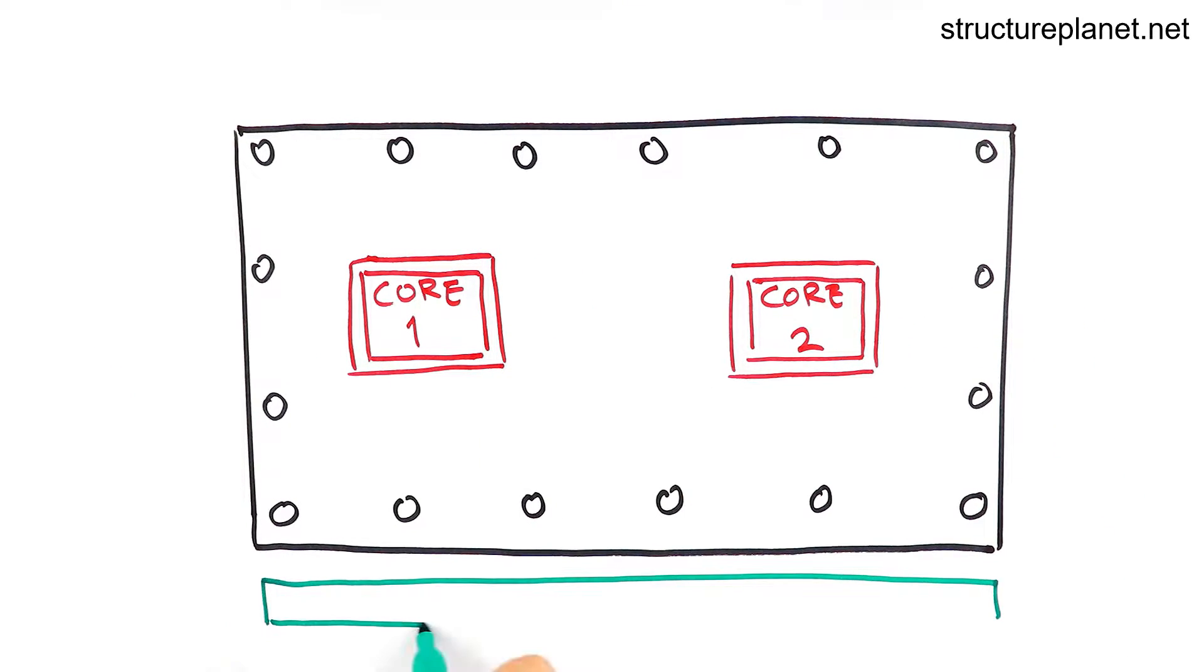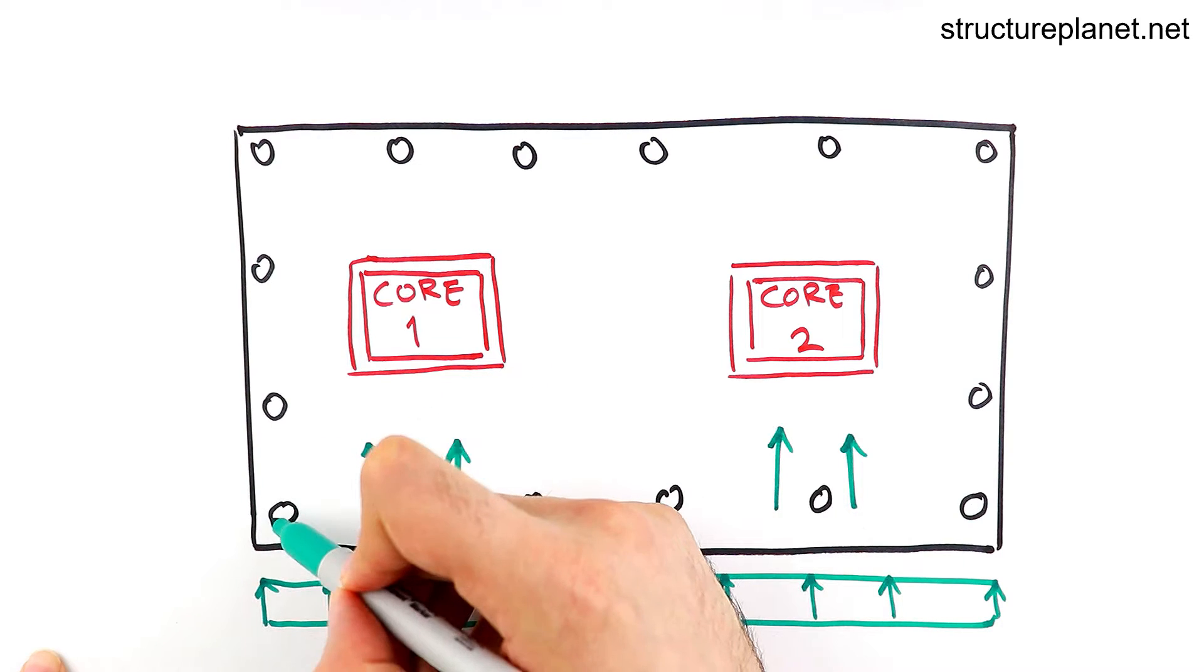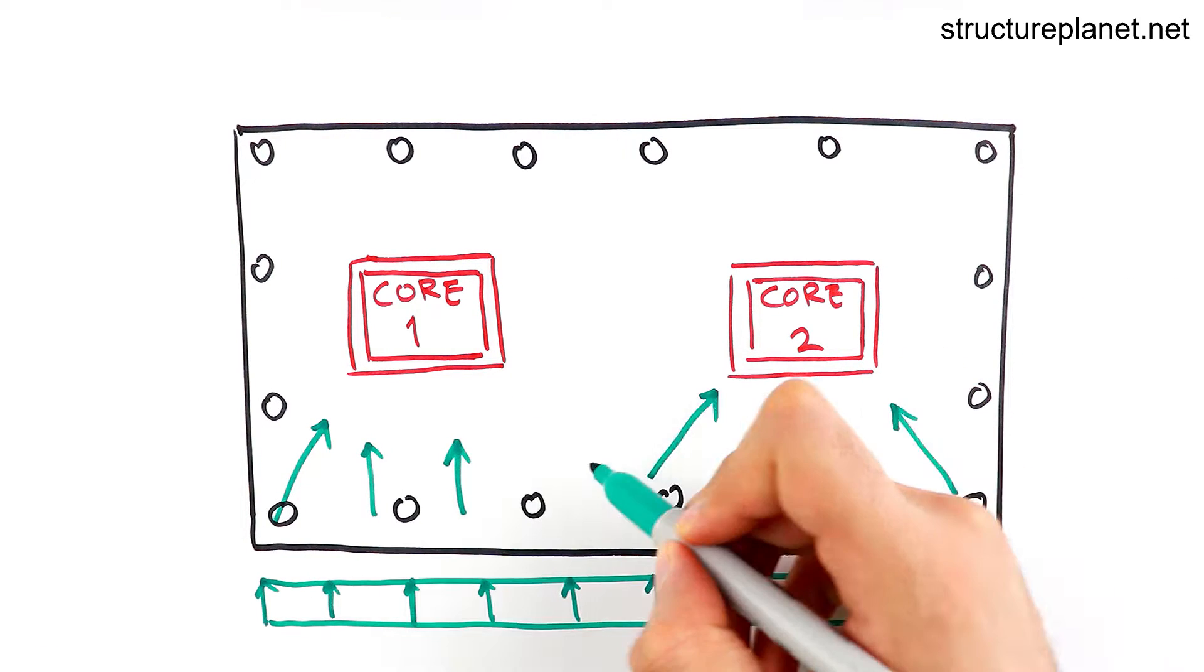So it can travel down to the foundation system and eventually to the ground. This is called the load path and buildings should have a well defined and designed load path for lateral loads that may come from any direction.